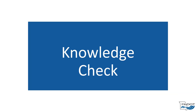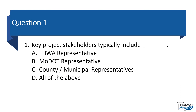Question 1: Key project stakeholders typically include which of the following? The correct answer is D, All of the above. Stakeholders are covered in Section 1 of this module. These stakeholders should be consulted and made aware of the plan of work set forth in the Methods and Assumptions Report for the project.